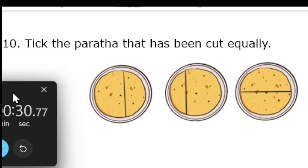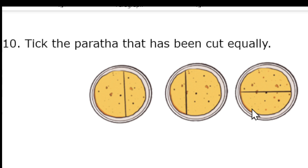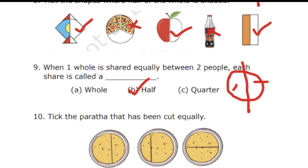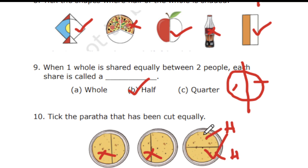The timer is up. The correct option is option C, the last one, because it is cut equally. So the correct option is option three. The other two are not split into equal parts. This one shows the first half and the second half, and if divided into four equal parts you get four quarters — one, two, three, and four.